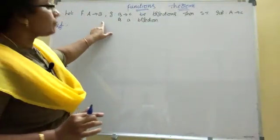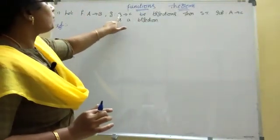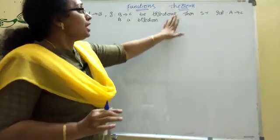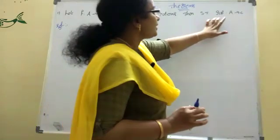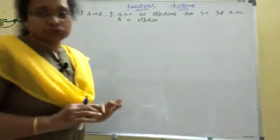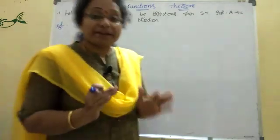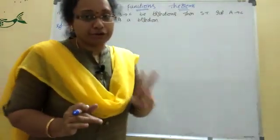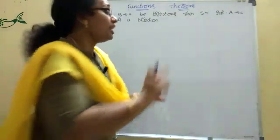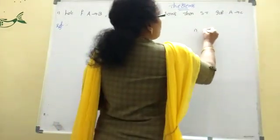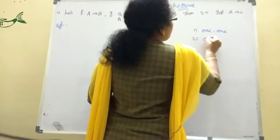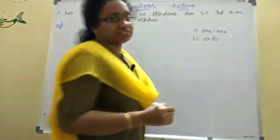F from A tends to B, and G from B tends to C — two bijections are already given. Then show that G circle F from A tends to C is also a bijection. The second theorem is a bijection. Now I am going to show you: what is bijection? Bijection has two functions — first, 1-1 function; second, onto function. That is the bijection.